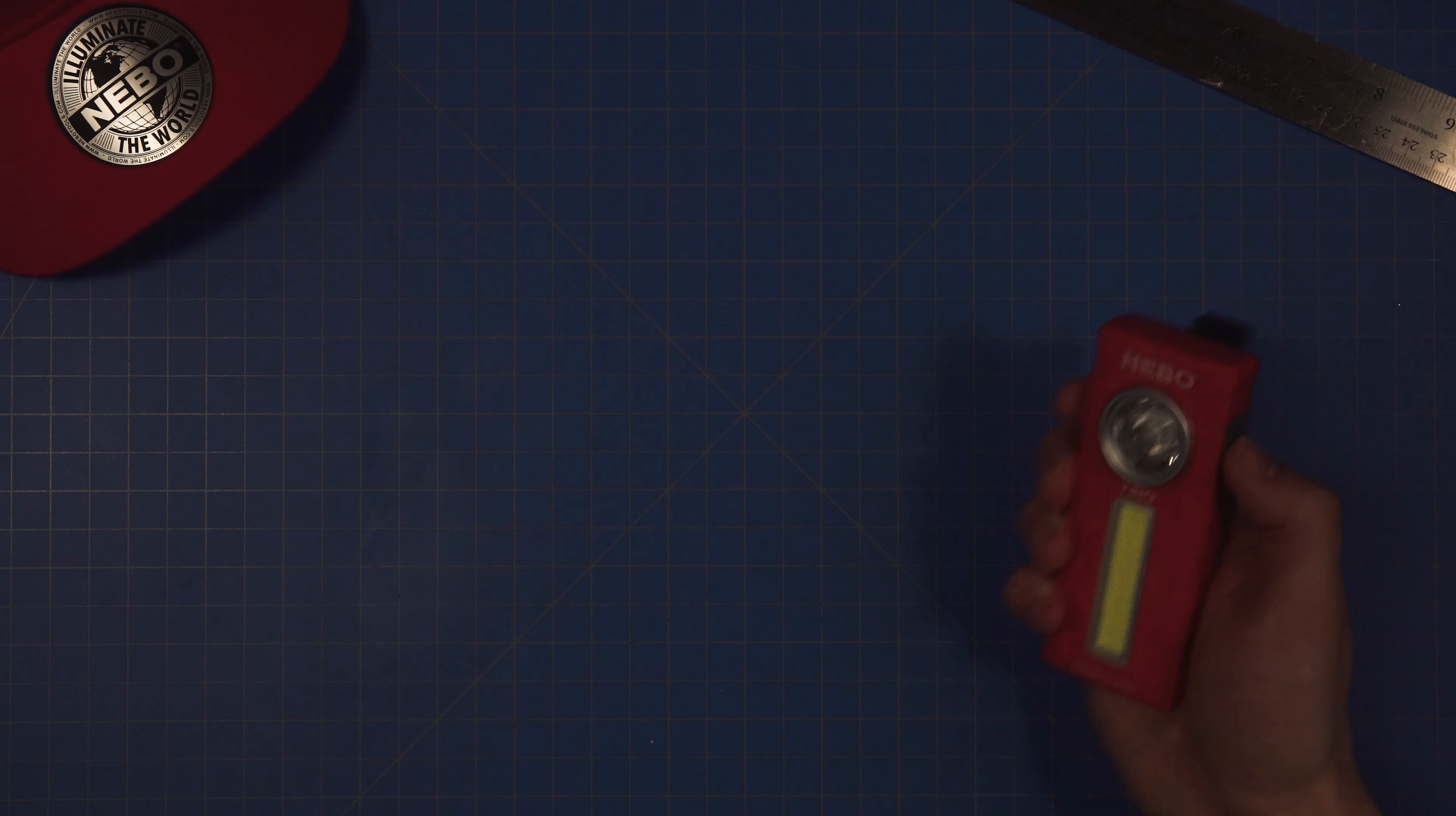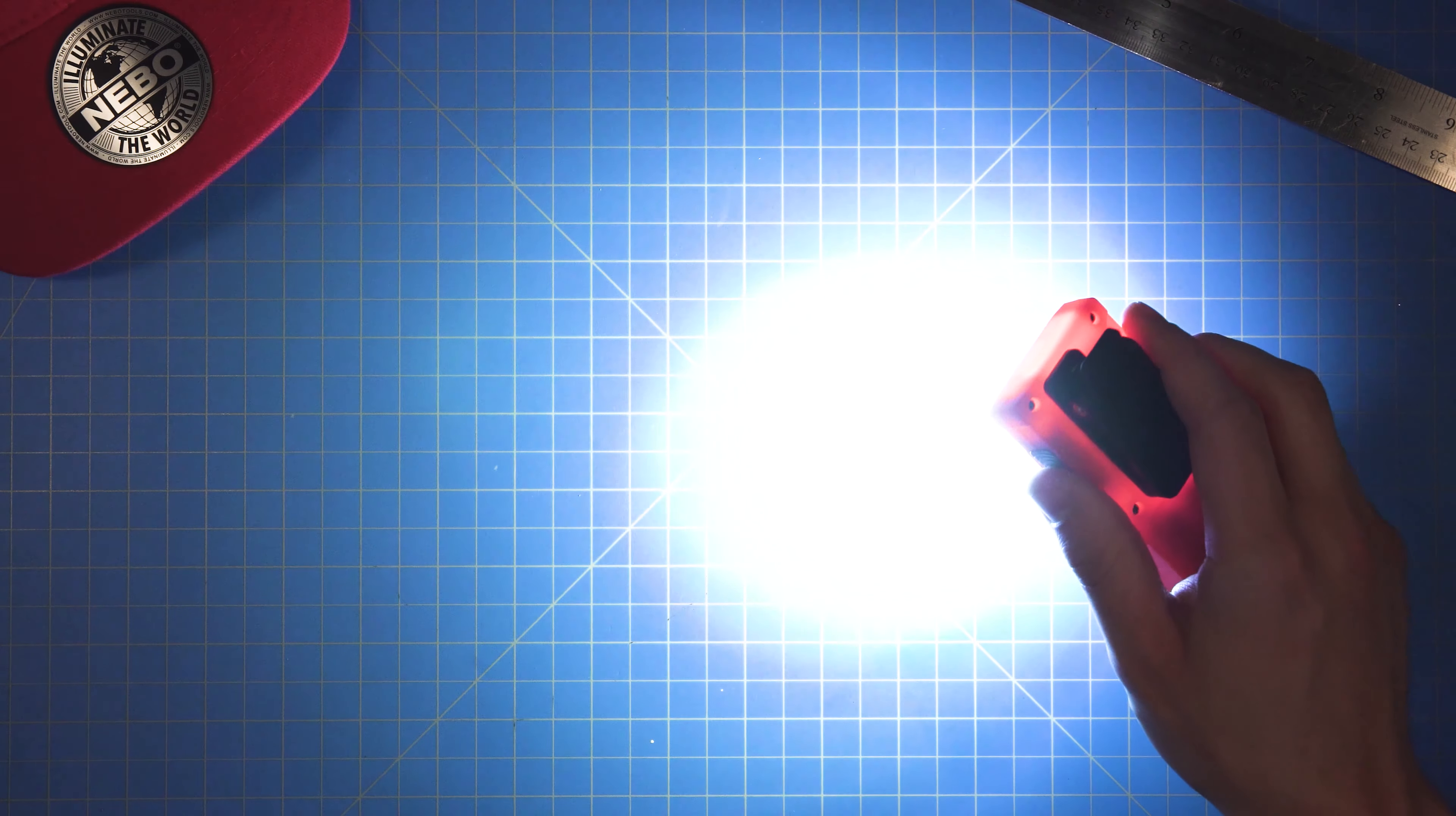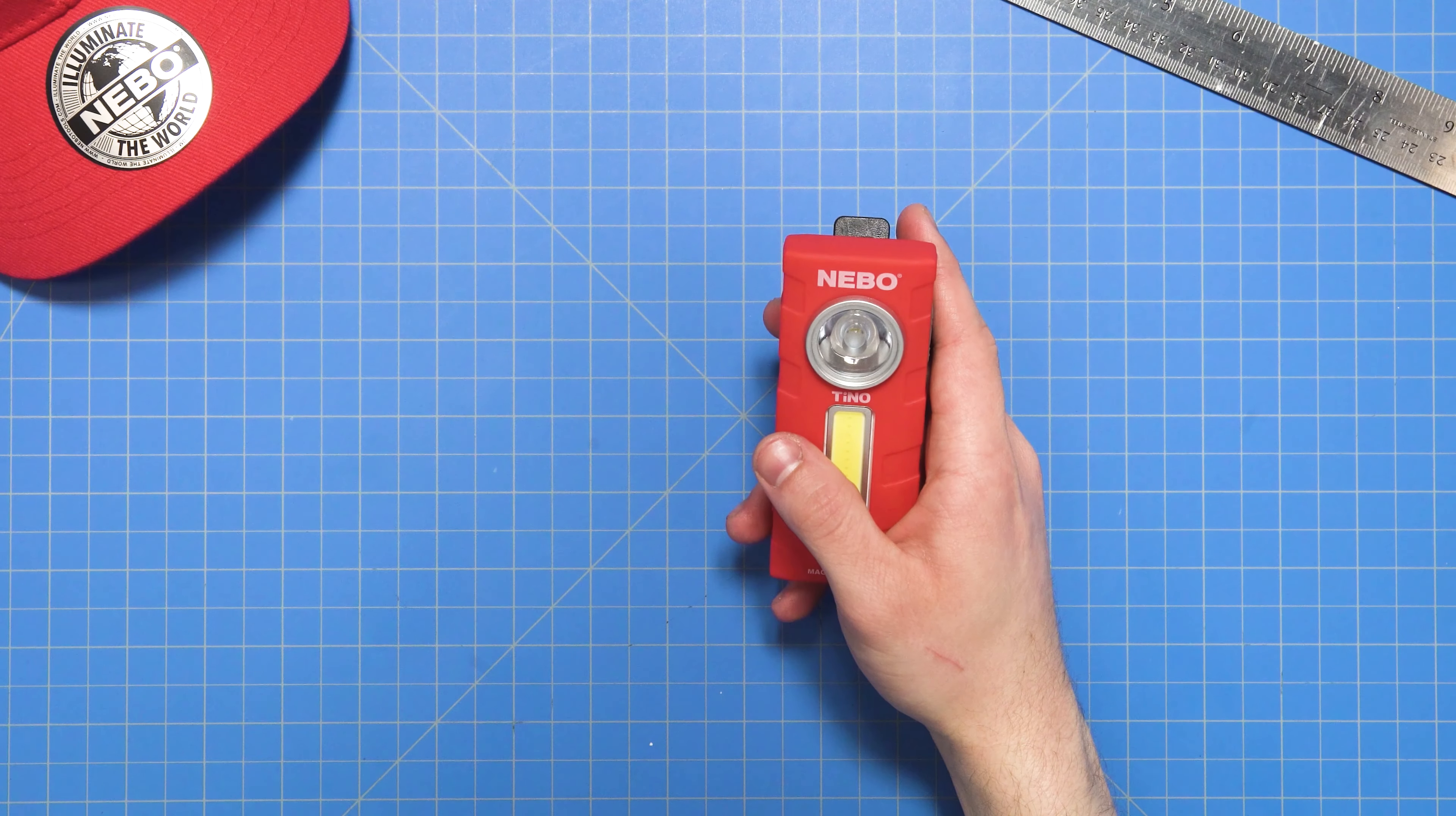To raise the brightness back up, simply continue holding the button down until it gets brighter. Once you have reached the highest brightness, the flashlight will flash again. Also worth noting is the Tino's IPX4 water resistance rating and its 50,000-hour LED life.